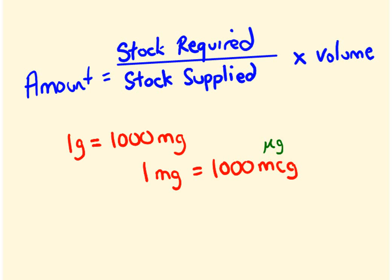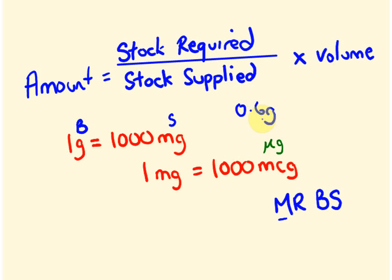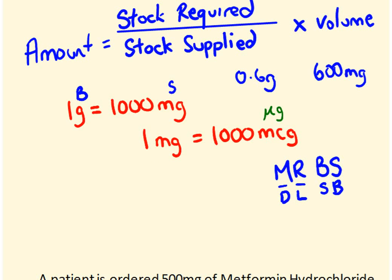Just a couple of things about how I remember these conversions — I use this idea called 'Mr. BS.' If you're going from a bigger unit like grams to a smaller unit like milligrams, you multiply by a thousand. For example, 0.6 grams to milligrams: 0.6 times a thousand equals 600. Alternatively, move the decimal place right three times. Alternatively, if going from smaller to bigger, you divide or move left.